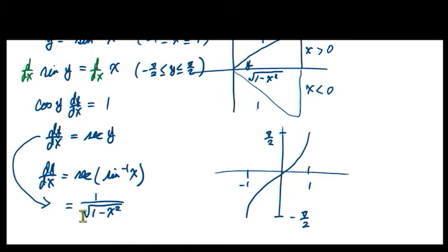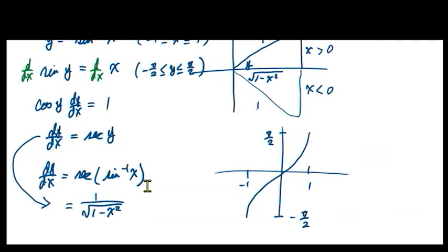If you take a derivative of a trig function you get a trig function, but not with inverse trig — the derivative becomes a regular algebraic expression. It's one of those weird things. Any other questions? I'm a little pressed for time.